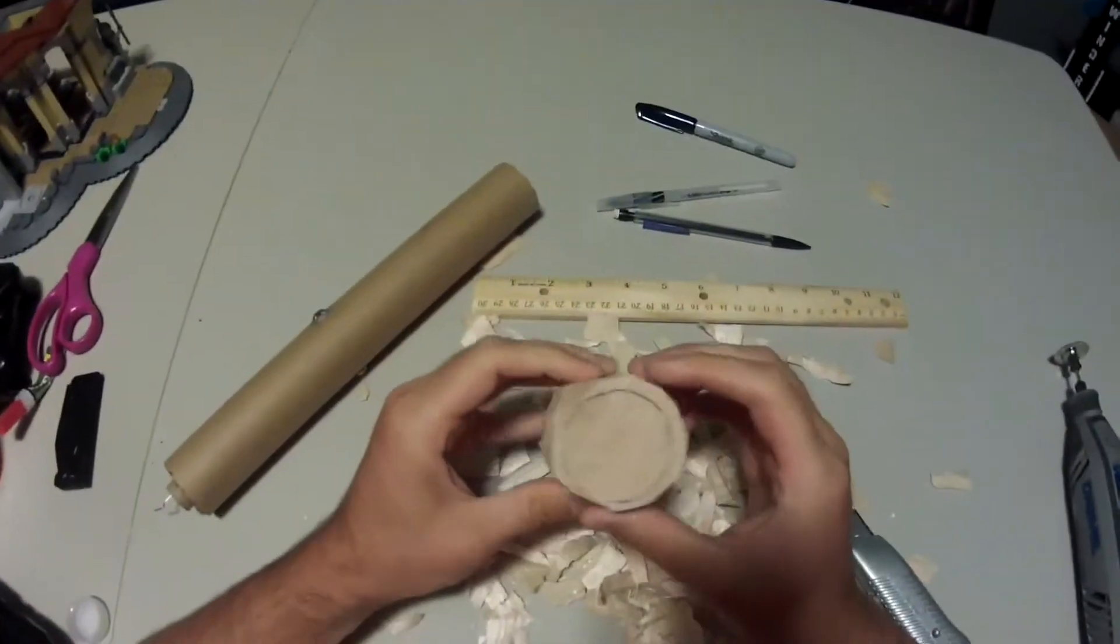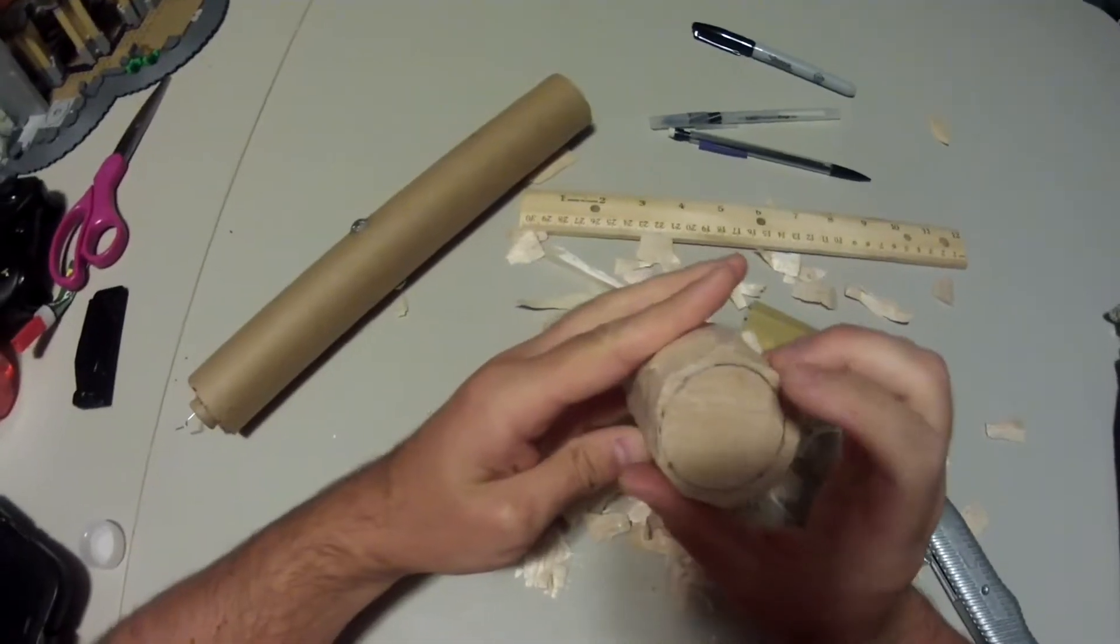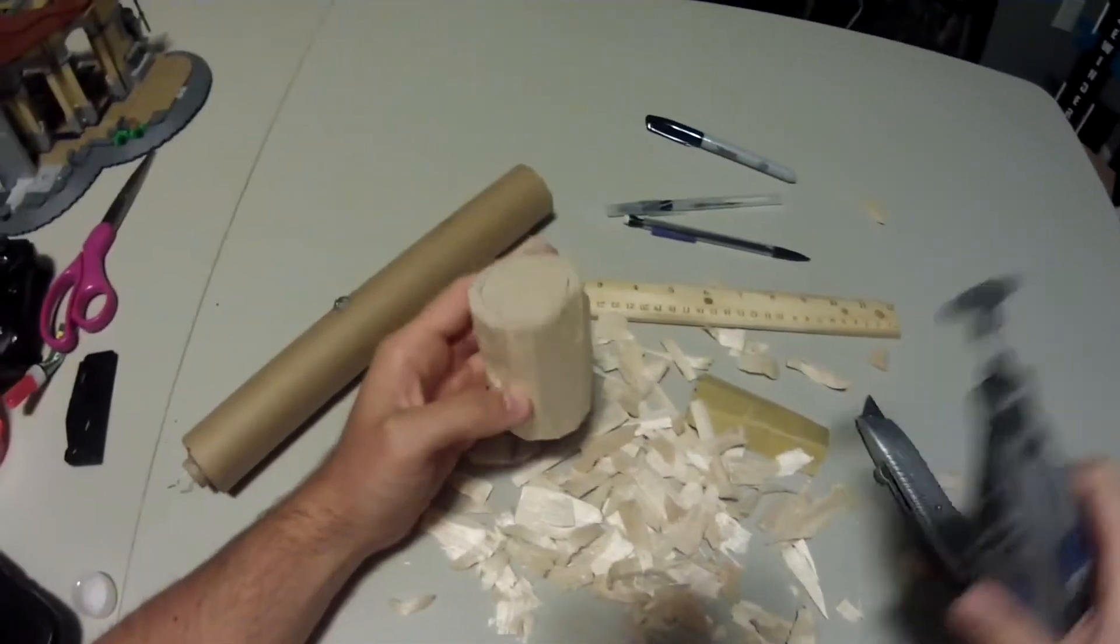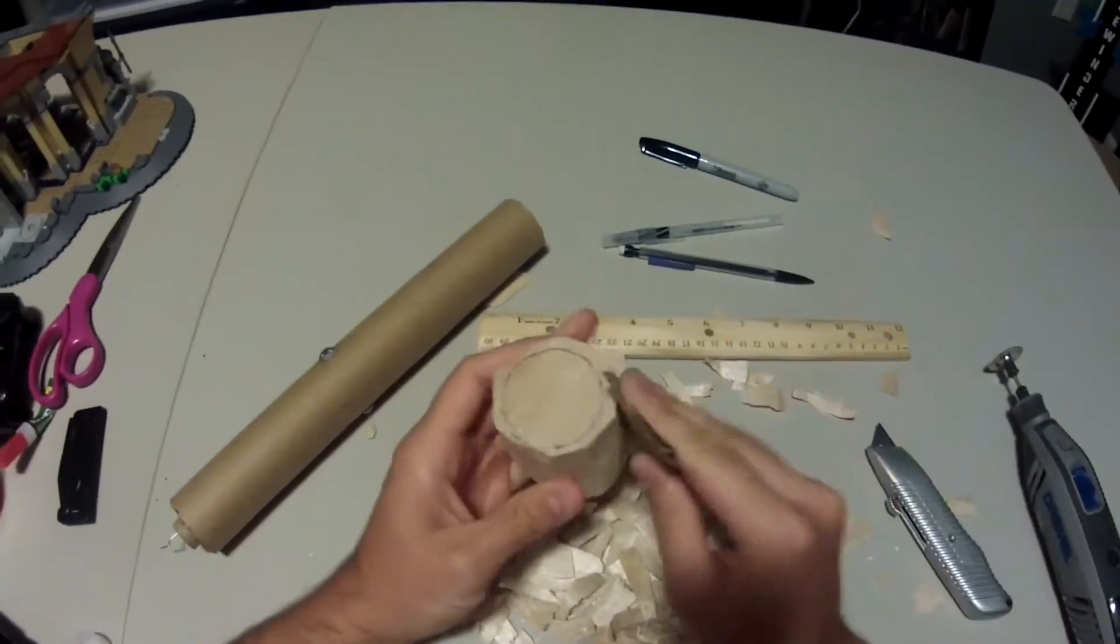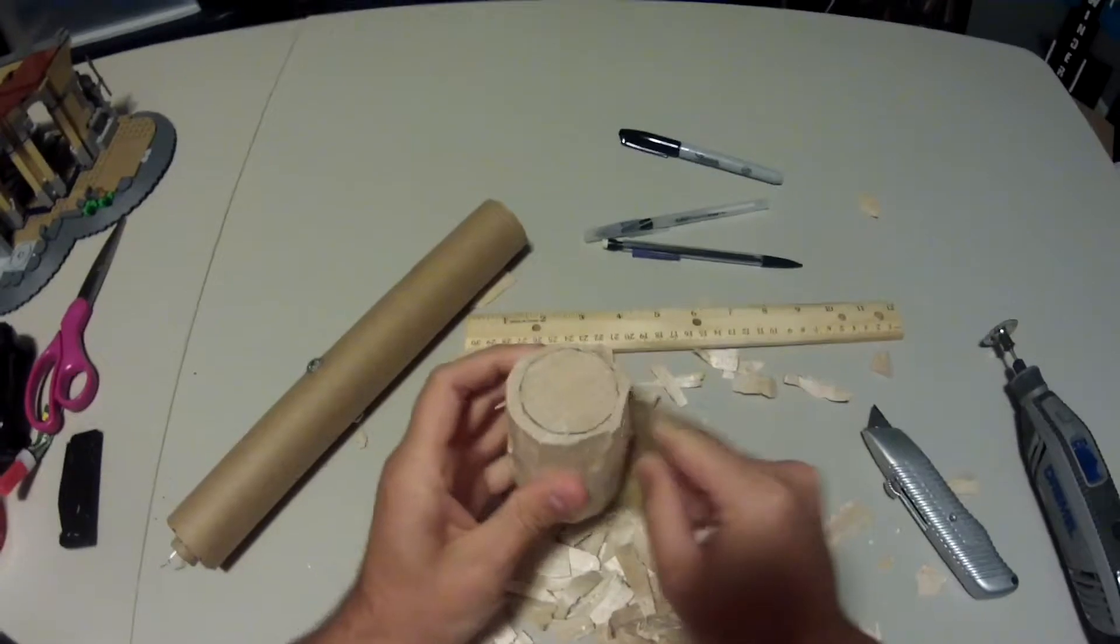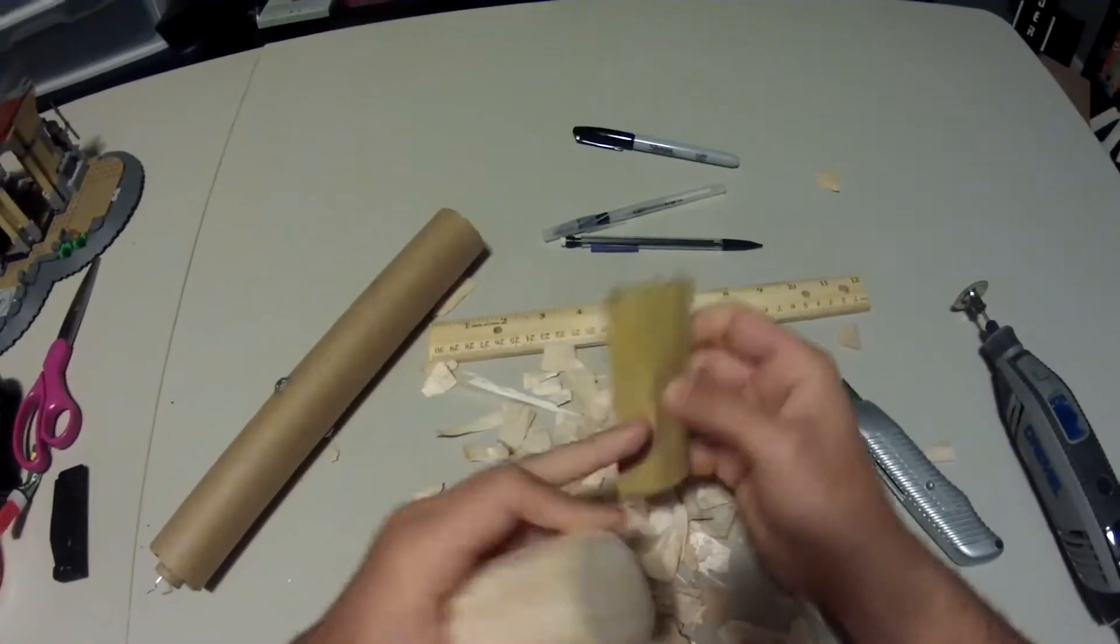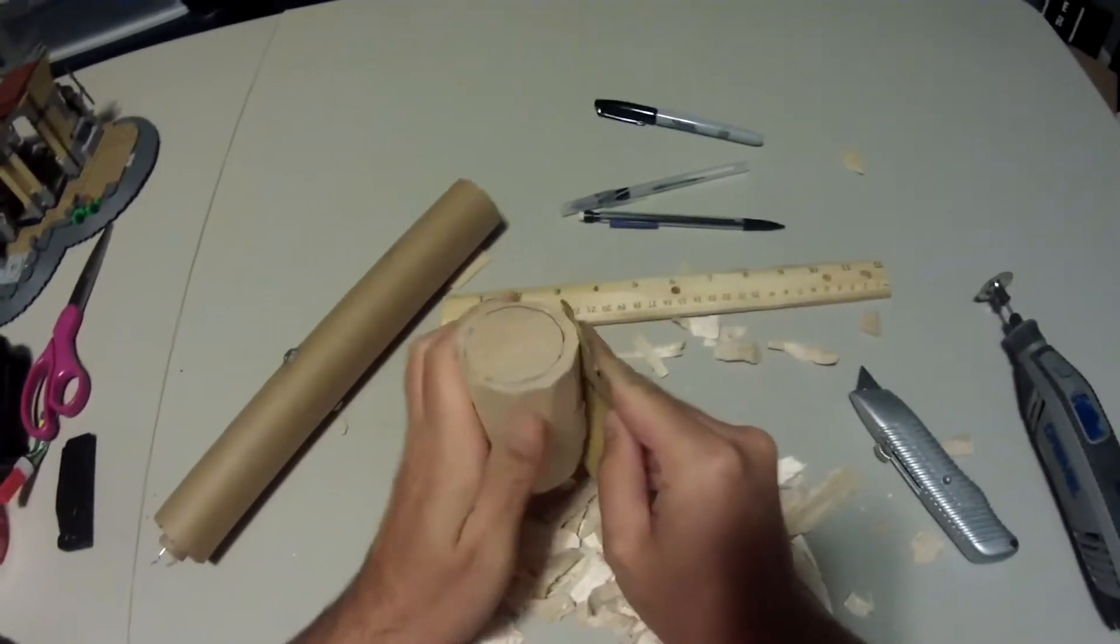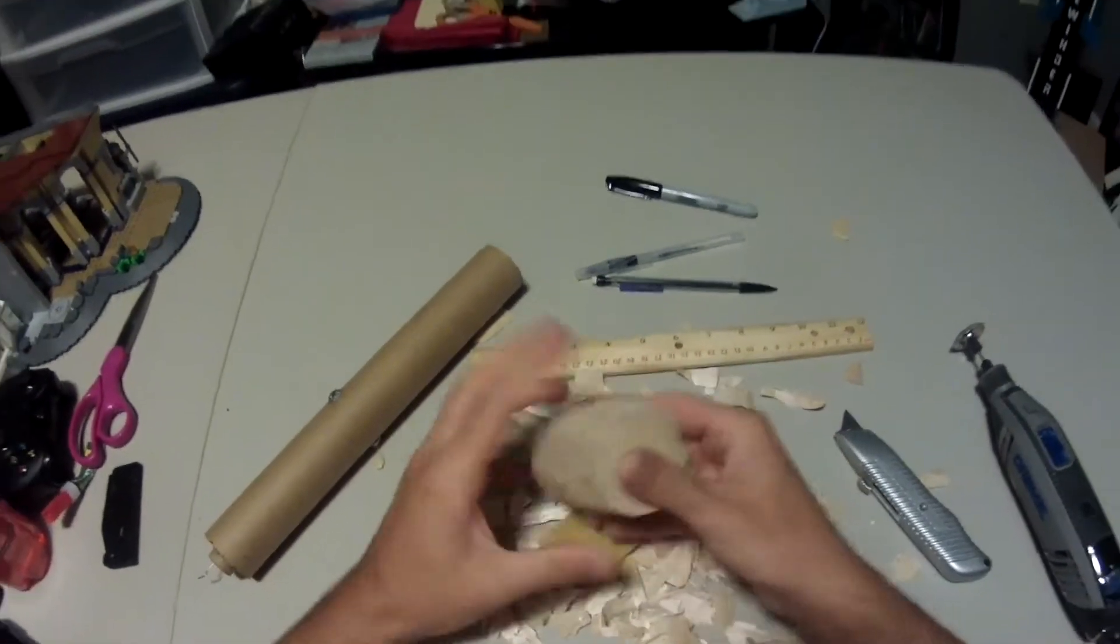As you can see, I shaved down pretty close to the line but I stopped before I got too close where I could accidentally cut into my cylinder. So I'm going to switch over to my Dremel and Dremel it out, and then I'm going to switch over to sandpaper. If you don't have a Dremel, just go ahead and use sandpaper from here. I recommend you use a heavy grit sandpaper so you can really do some work on it instead of a light grain paper that will take you forever to do. So I'm going to go do that and I'll be right back.